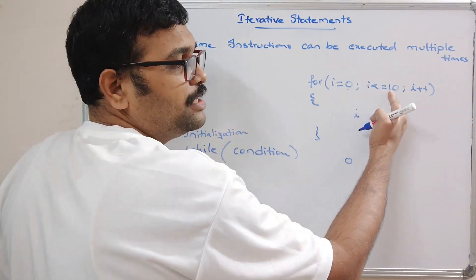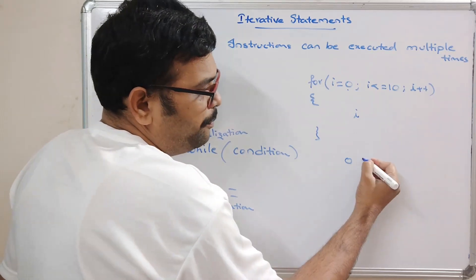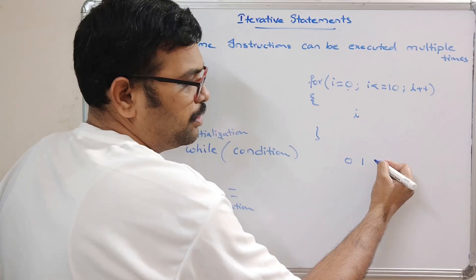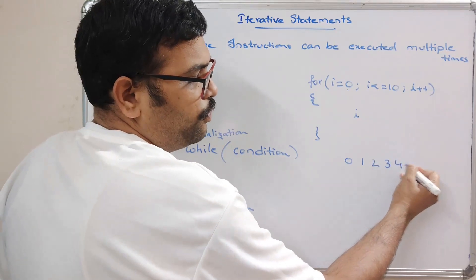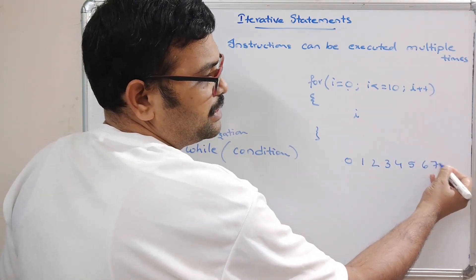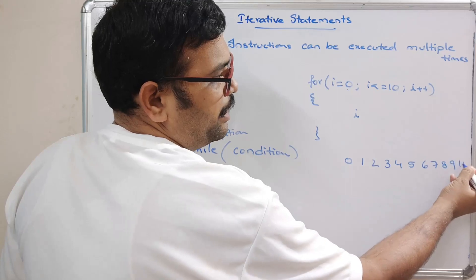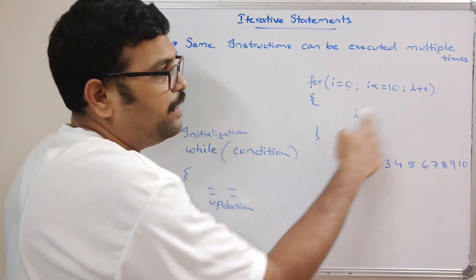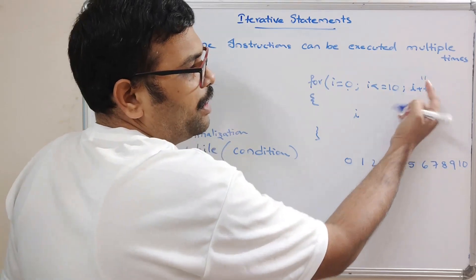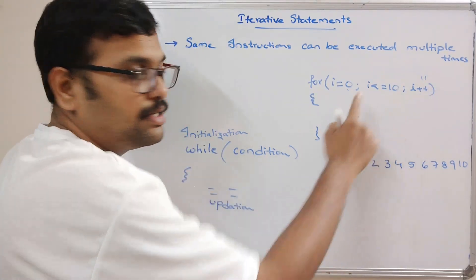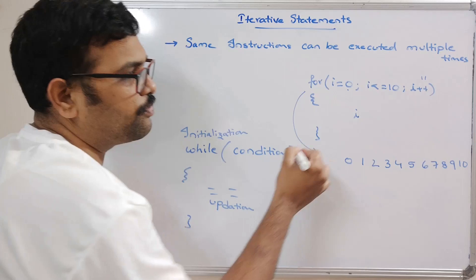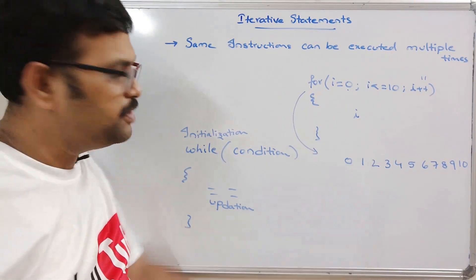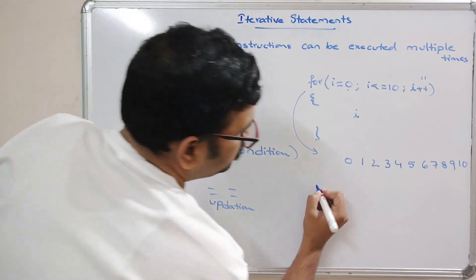Continuing: two, three, four, five, six, seven, eight, nine, and ten — ten is less than or equal to ten, so ten is printed. After updation i becomes 11, and 11 is not less than or equal to ten, so the control comes out from the loop. That's how the for loop executes.